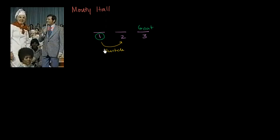Then they ask: do you want to switch to curtain number two? The question is — does it make a difference? Are you better off holding fast and sticking to your original guess? Are you better off switching to whatever curtain is left? Or does it not matter — is it just random probability and switching makes no difference?